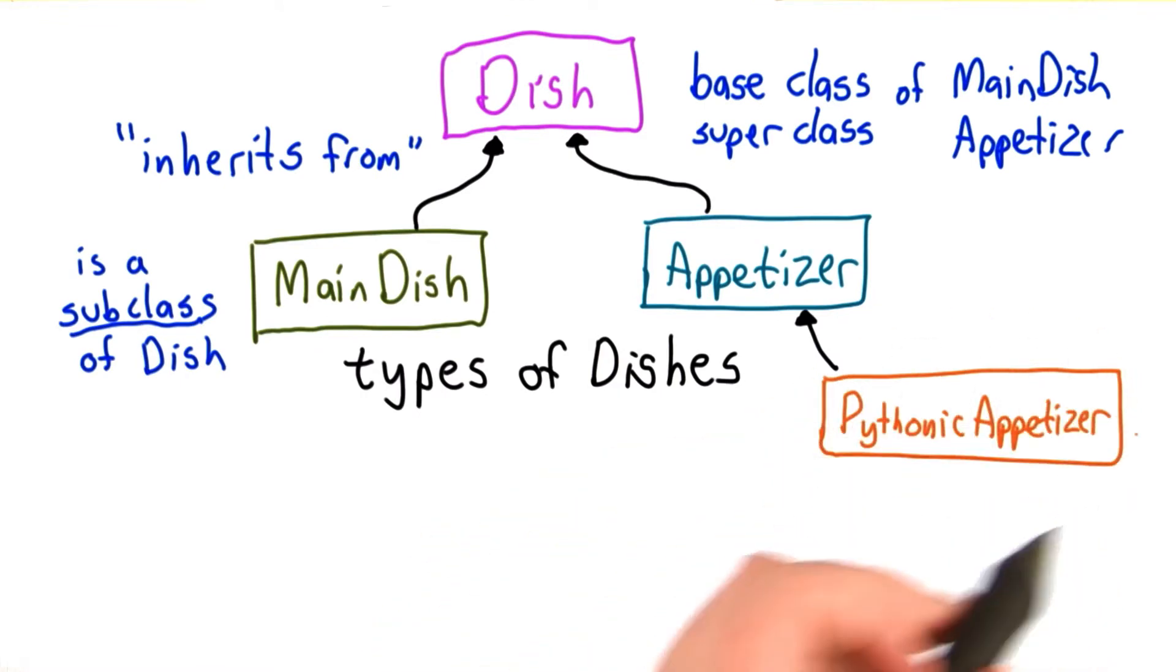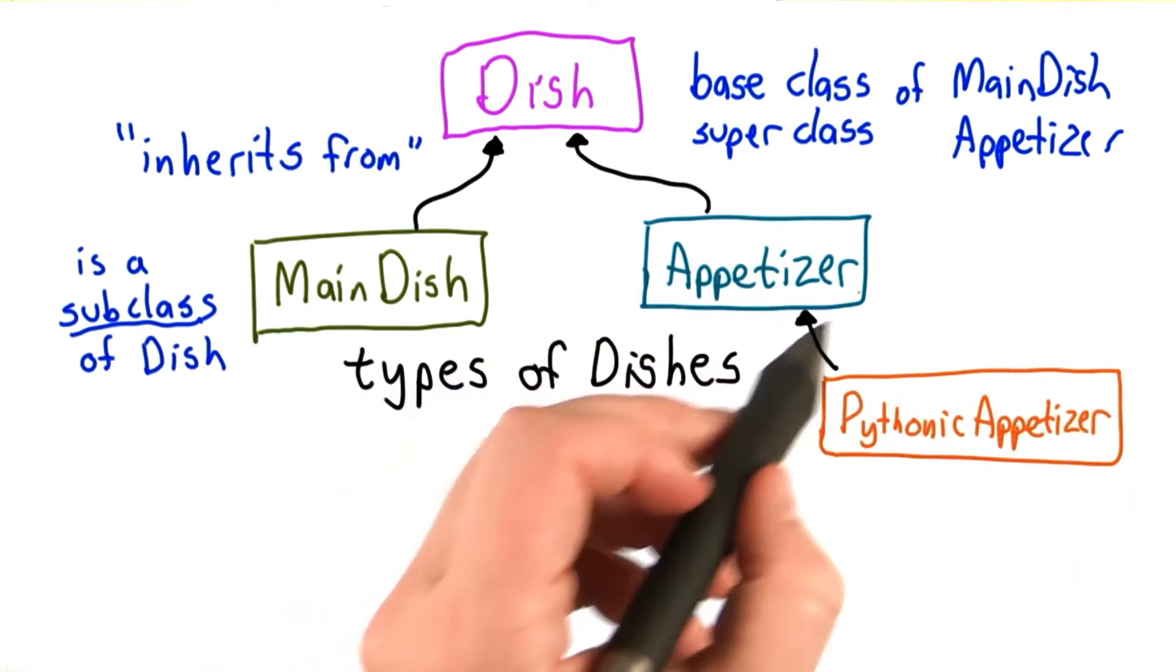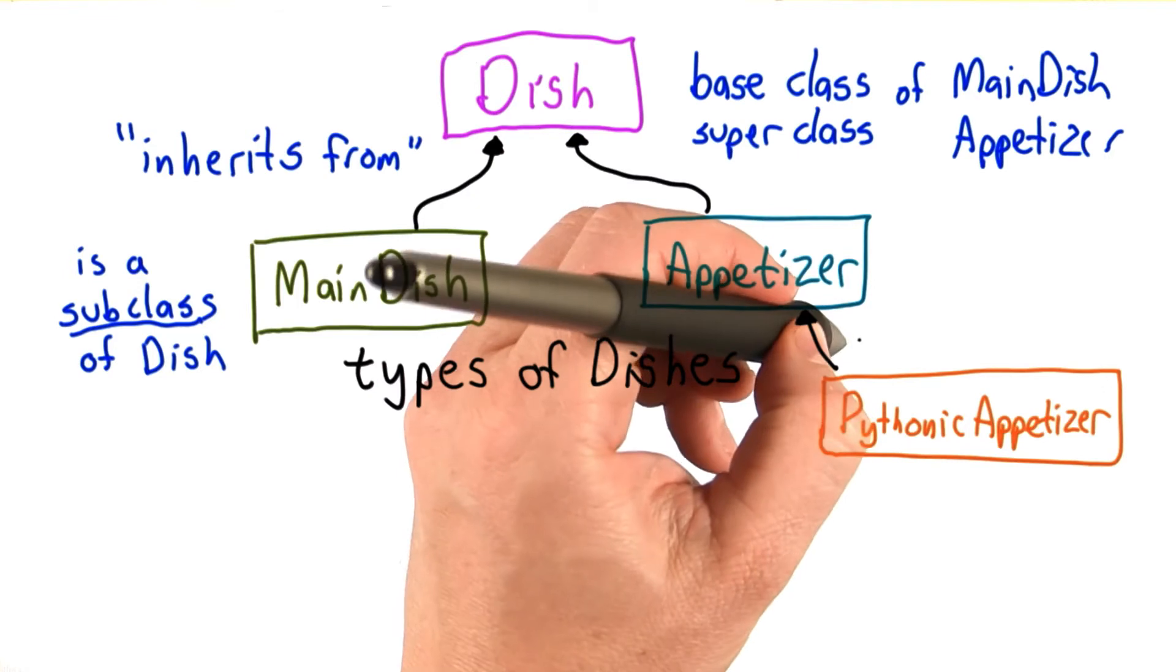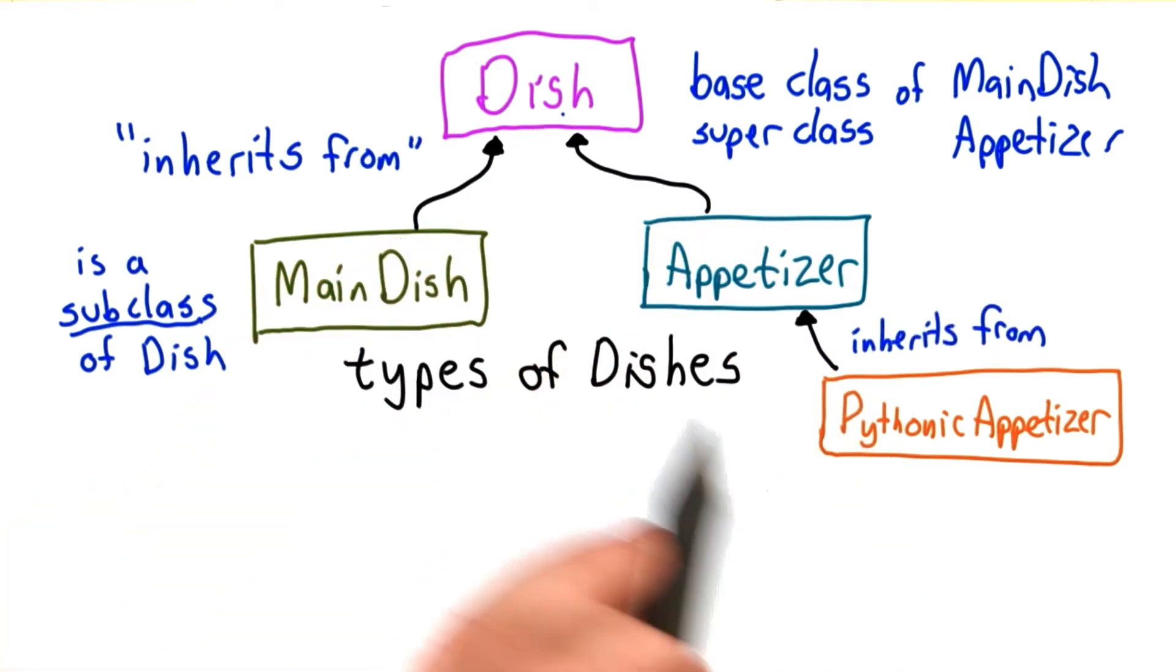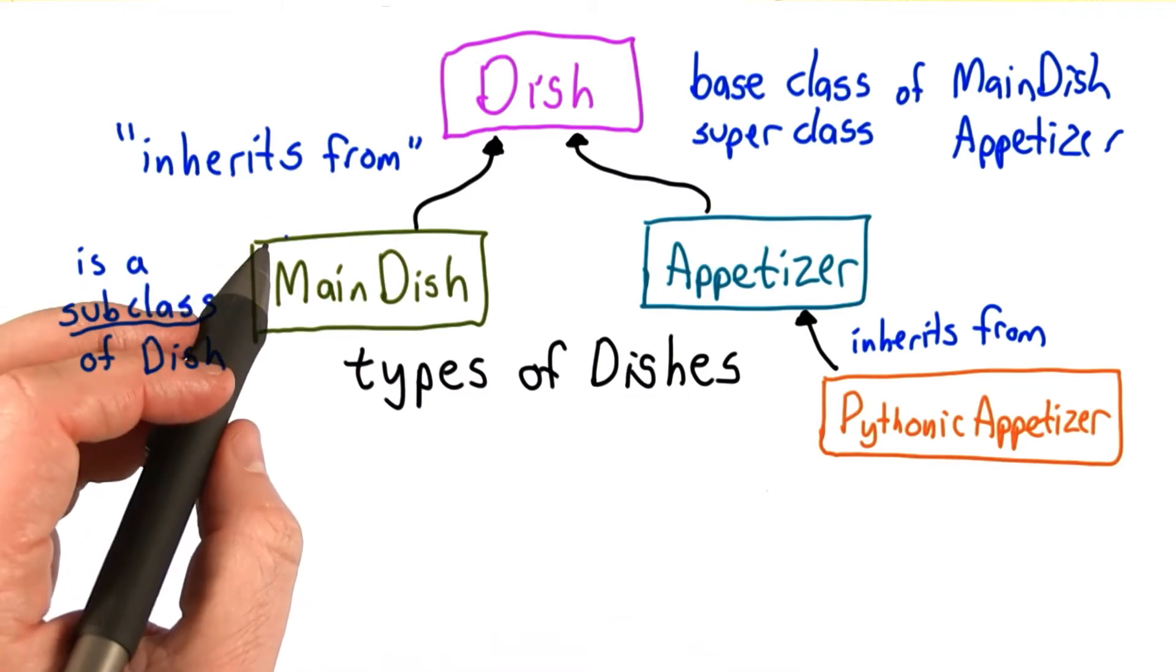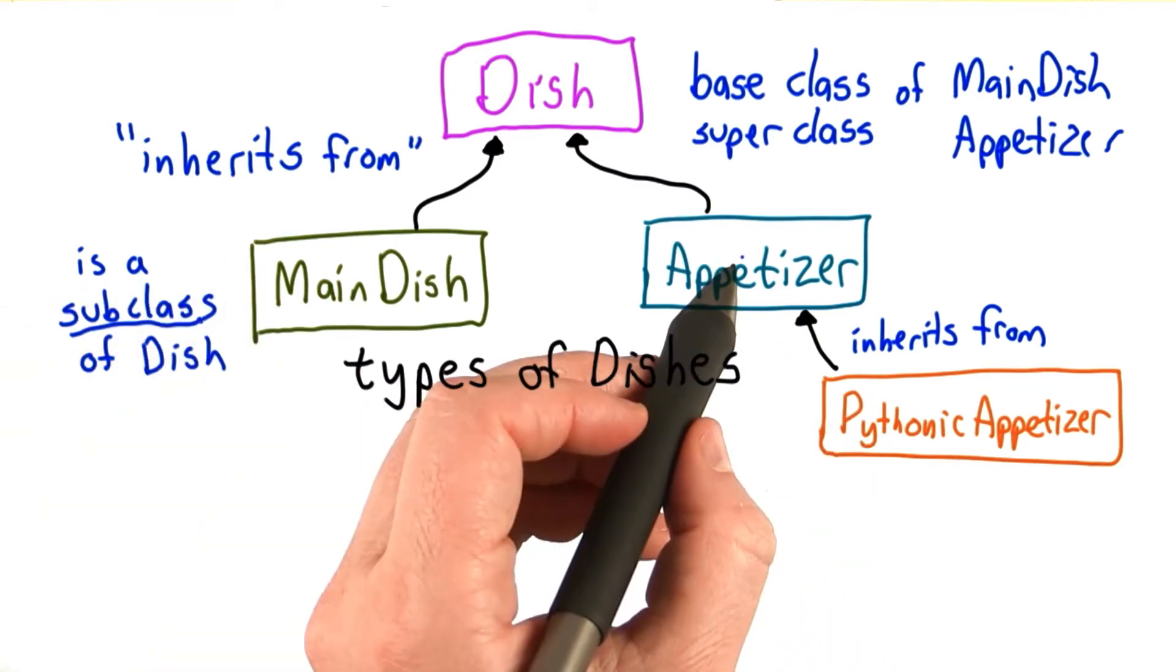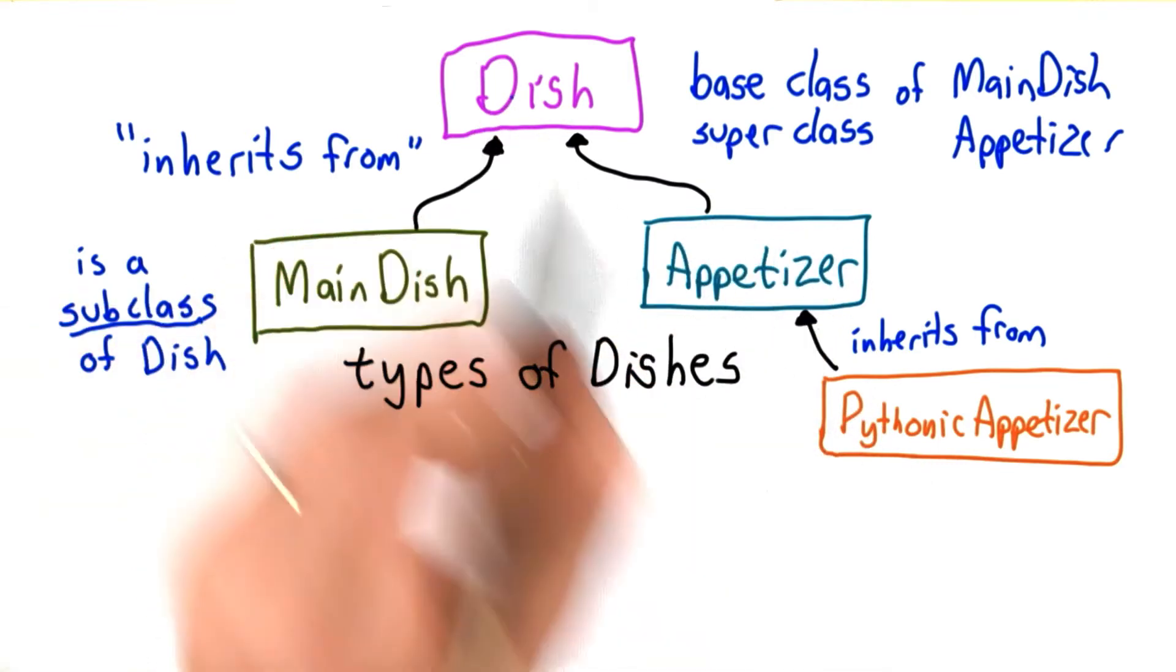We can keep going. We could have a new derived class based on the appetizer class, and then the pythonic appetizer would inherit from appetizer. It would also inherit from dish, and these subclass terms are transitive. So pythonic appetizer is a subclass of appetizer. It's also a subclass of dish.